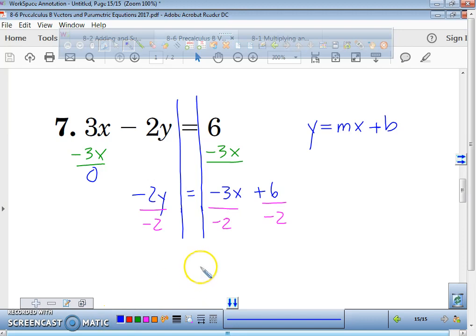We're just doing number 7. All right, if we get y equals, a negative divided by a negative is a positive. So we get 3 over 2x. 6 divided by negative 2 is a negative 3. So you get the equation y equals 3/2x minus 3.